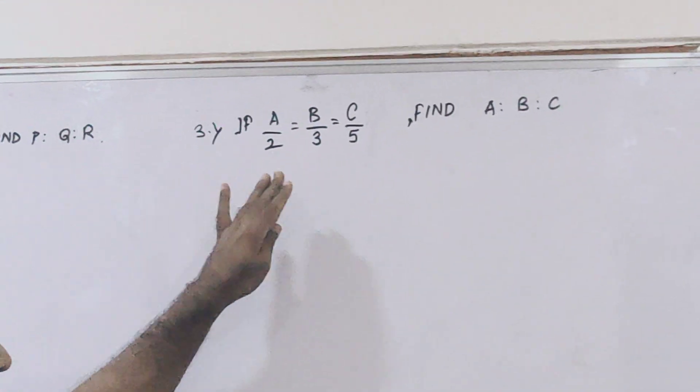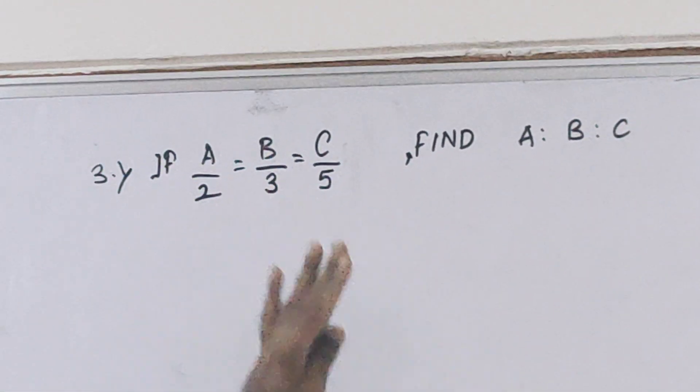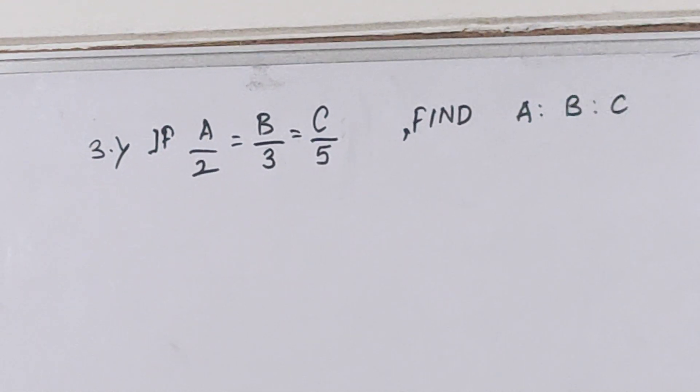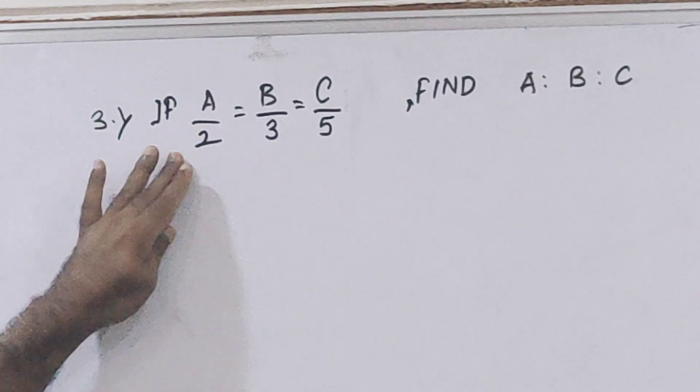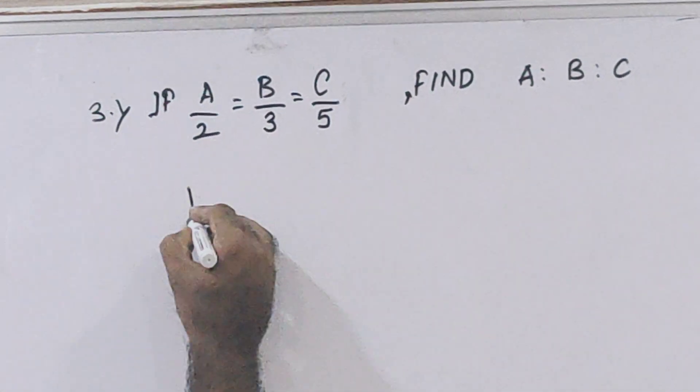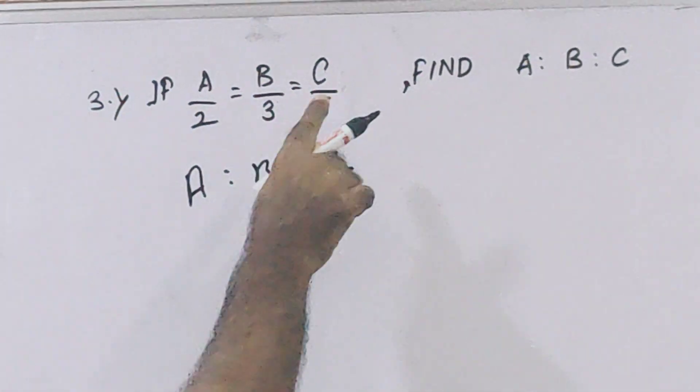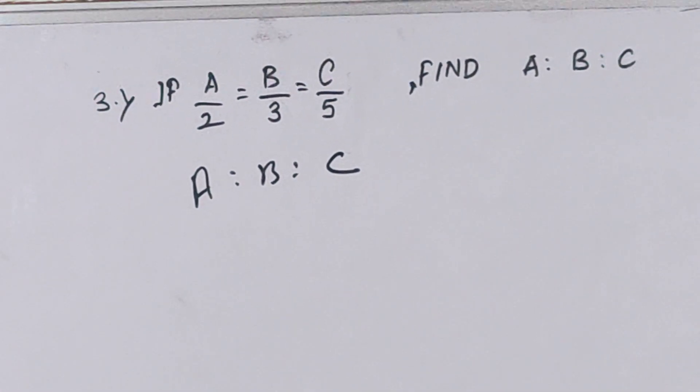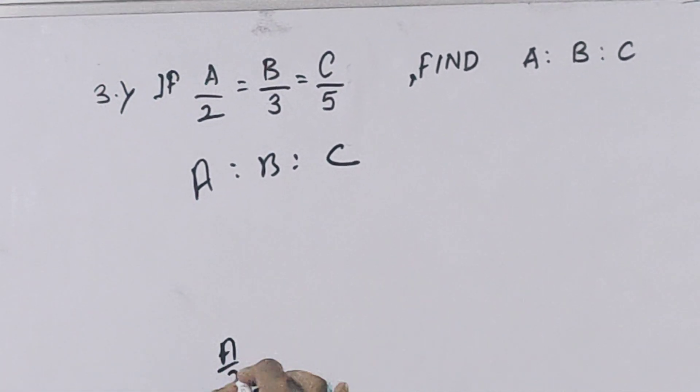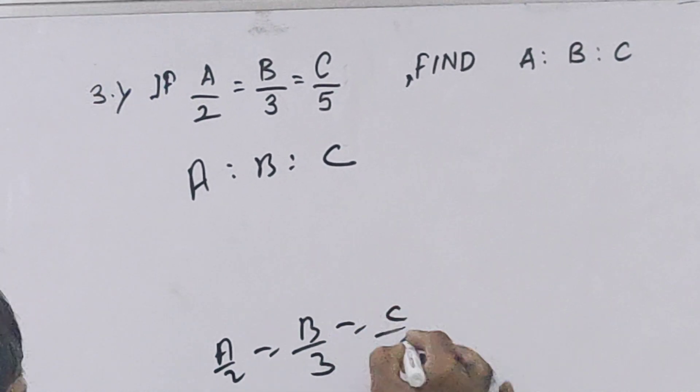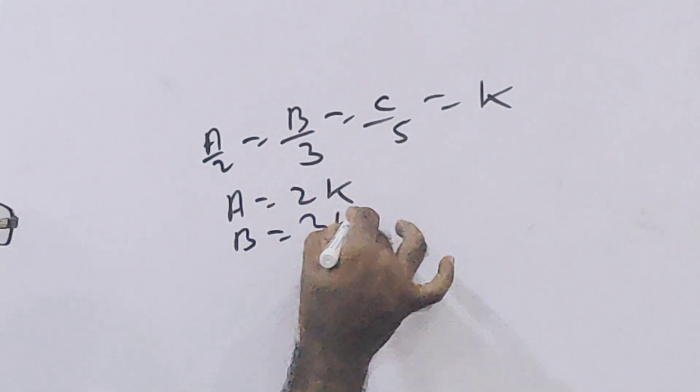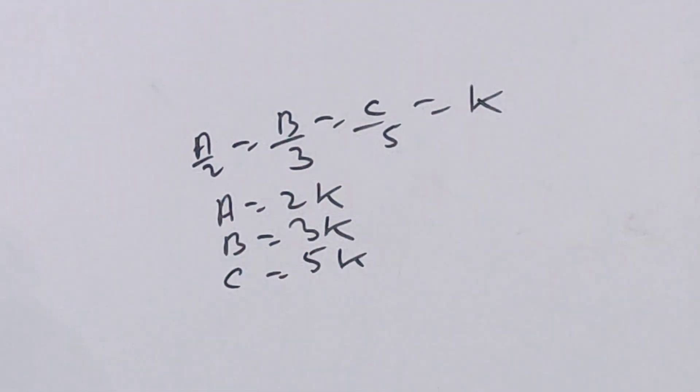In the same way, third question: if A by 2, B by 3, and C by 5 are equal, then we have to find A ratio B ratio C. Very simple. Suppose this is equal to K. Then A by 2 equals K, so A equals 2K. B by 3 equals K, so B equals 3K. And C by 5 equals K, so C equals 5K.